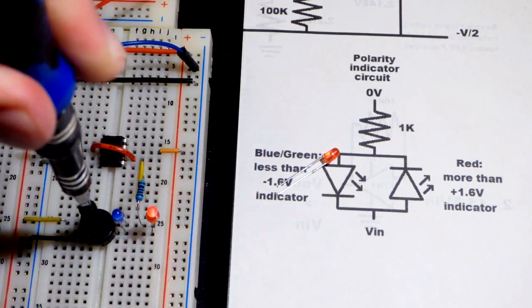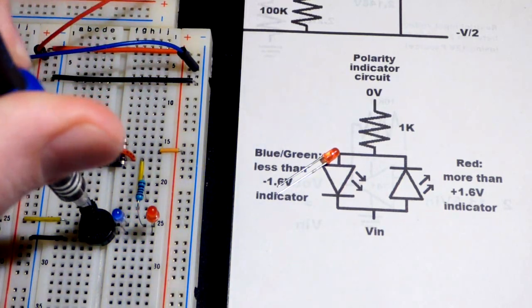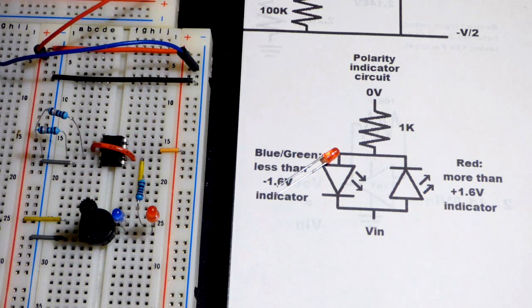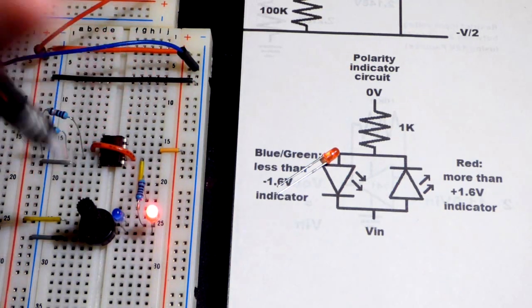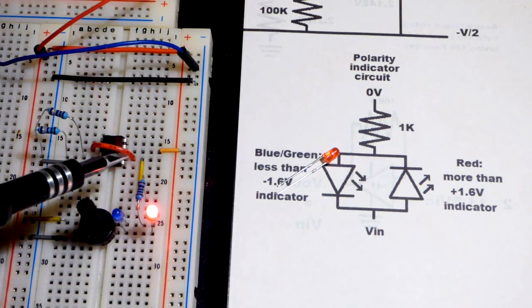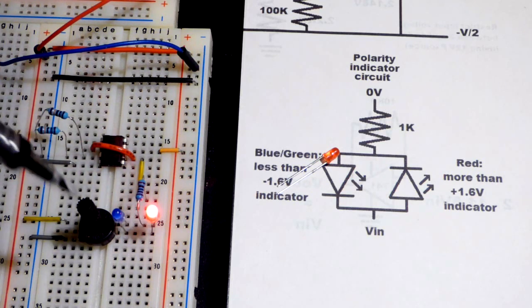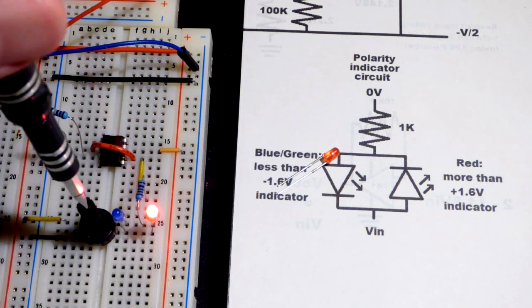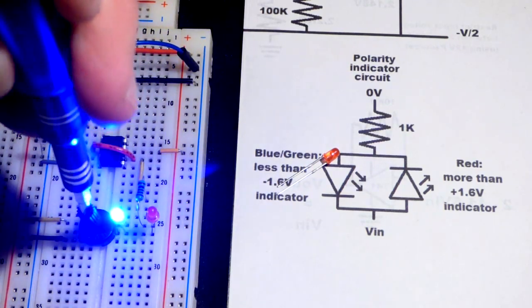There you can see a really simple way to test out that our output of the trim pot here is halfway between the positive rail and the negative rail. Because right now if I go to the positive rail we are more positive than the ground over here, the output of the 741 op-amp. We know that because of which LED is lighting up the way that we wired it.